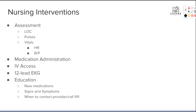Key nursing interventions include a thorough assessment, checking level of consciousness, pulses, and vitals — specifically heart rate and blood pressure. You may be giving medications, establishing IV access, and getting a 12-lead EKG. Once your patient is stable and able to understand, provide education on any new medications, the signs and symptoms of their condition, and when it would be appropriate to contact their provider or call 911.